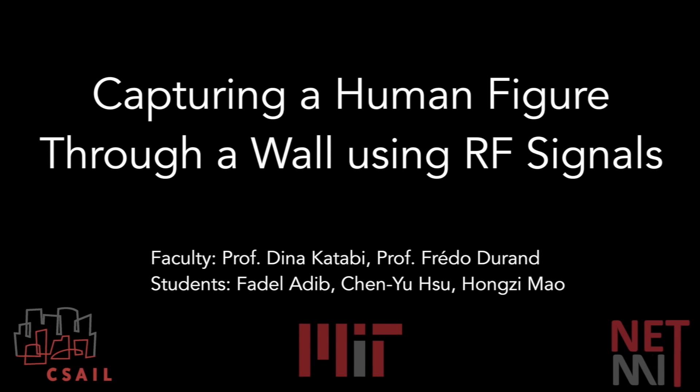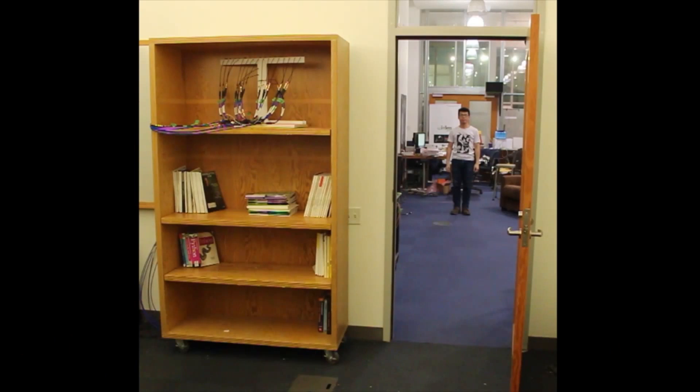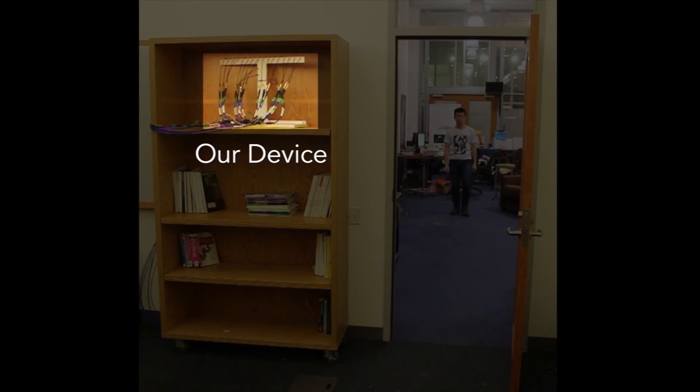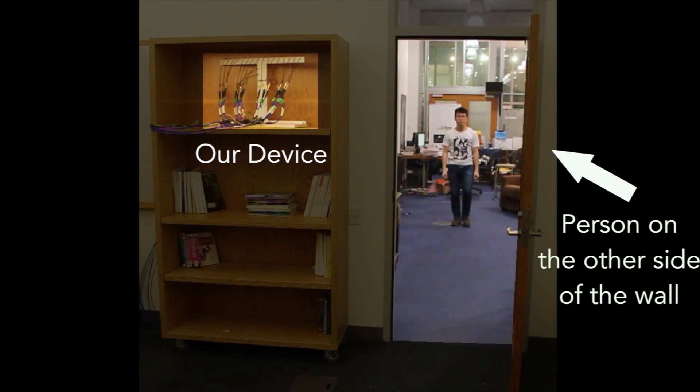This video describes a device that can capture the human figure through walls using RF signals. We place our device behind the wall and it can see the silhouette of a person who walks in an adjacent room.